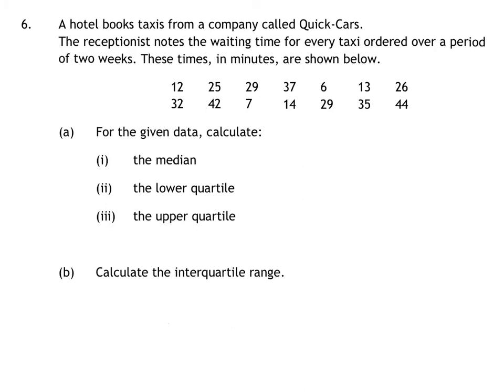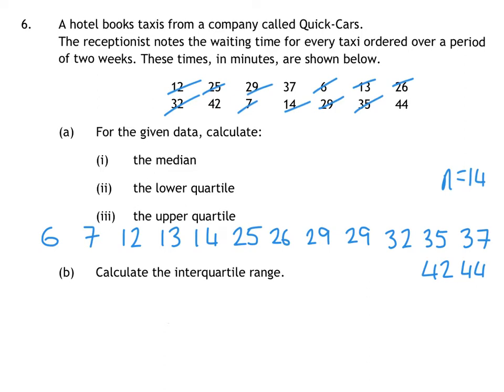Question 6 is our quartiles question. I'm just going to rewrite these numbers out in order. So writing them out in order, I've got that. Unfortunately, I haven't quite fitted them all in one line. There are 14 numbers there. So I'm going to split that in the middle. Half of 14 is 7. So 1, 2, 3, 4, 5, 6, 7. So there is my middle. That will be my Q2. The middle of the lower half gives me 3, 3 and 1 left in the middle. And the same for the other half.